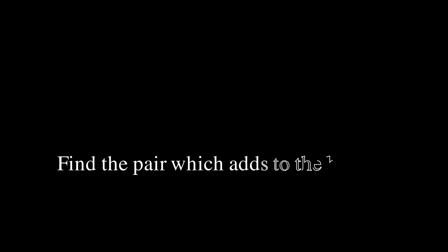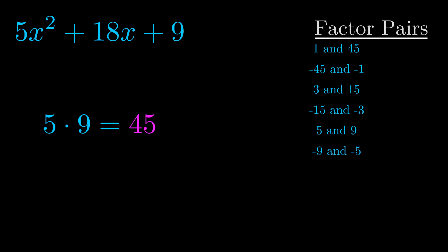The b value is the coefficient on the x term. That's the middle term, the one that we haven't done anything with yet. And really this is the only factor pair that we need.